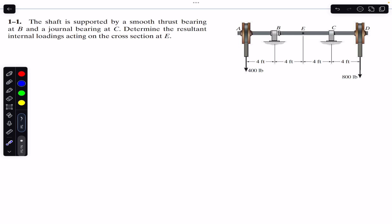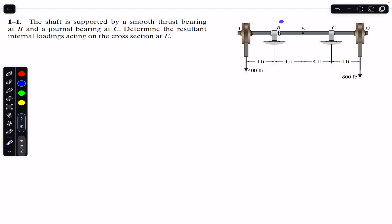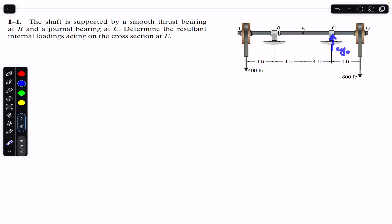The problem says that the shaft is supported by a smooth thrust bearing at B and a journal bearing at C. Determine the resultant internal loadings acting on the cross section at E. The thrust bearing can provide support in both the x and y directions — along the shaft and in the vertical direction — so we have Bx and By reactions. At C, the journal bearing can only provide support in the vertical direction, so we have a Cy reaction.